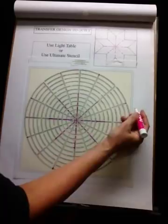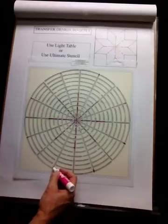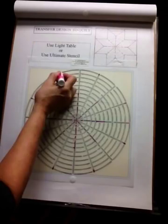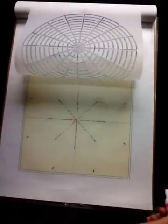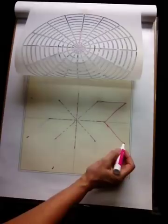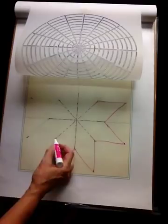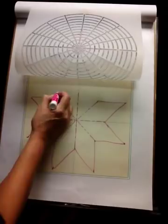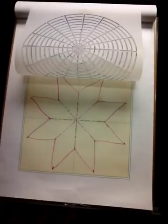Now you can draw a dot where your star points are going to go. Now you're going to lift up your stencil, and with your ruler, you're connecting your dots. Here's your eight-pointed star exactly the way you drafted it on your transparency. Voila, we have our eight-pointed star.